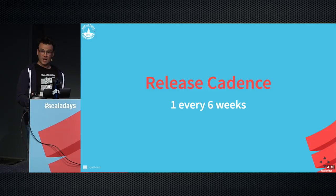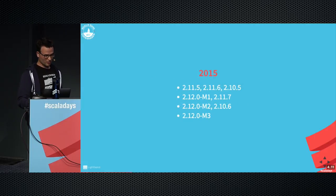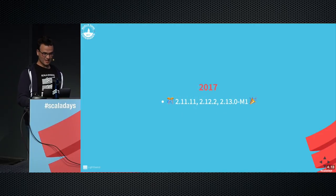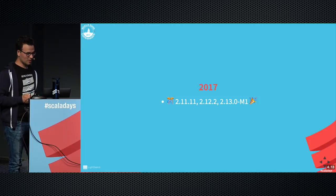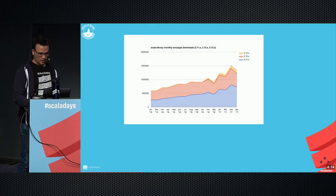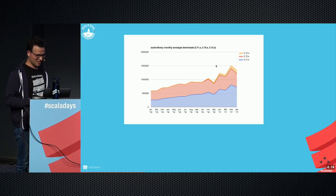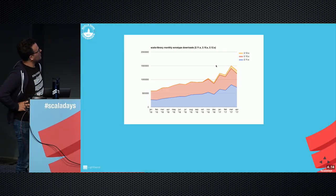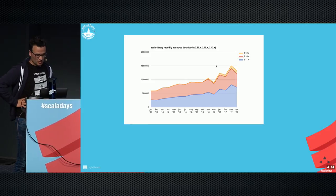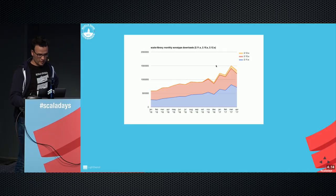We do about one Scala release every six weeks on average. The overarching 18-month cycle is pretty long, but we pump out a lot of releases. Most recently, 2.12.2 and 2.13.m1 are the current releases we're actively developing. The coolest thing is that we've doubled in monthly downloads over the last year — from 500k to over a million across the three current Scala versions.